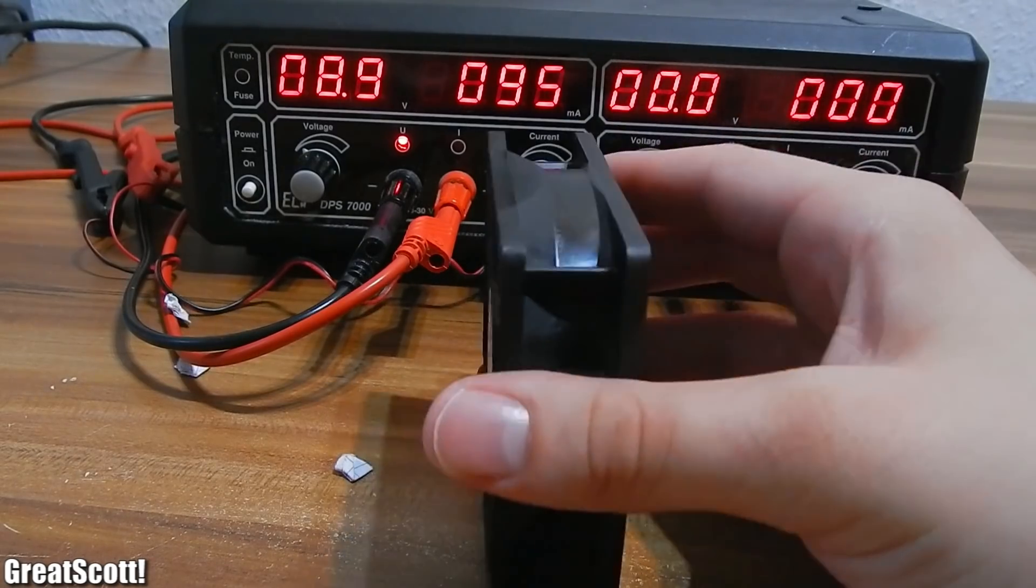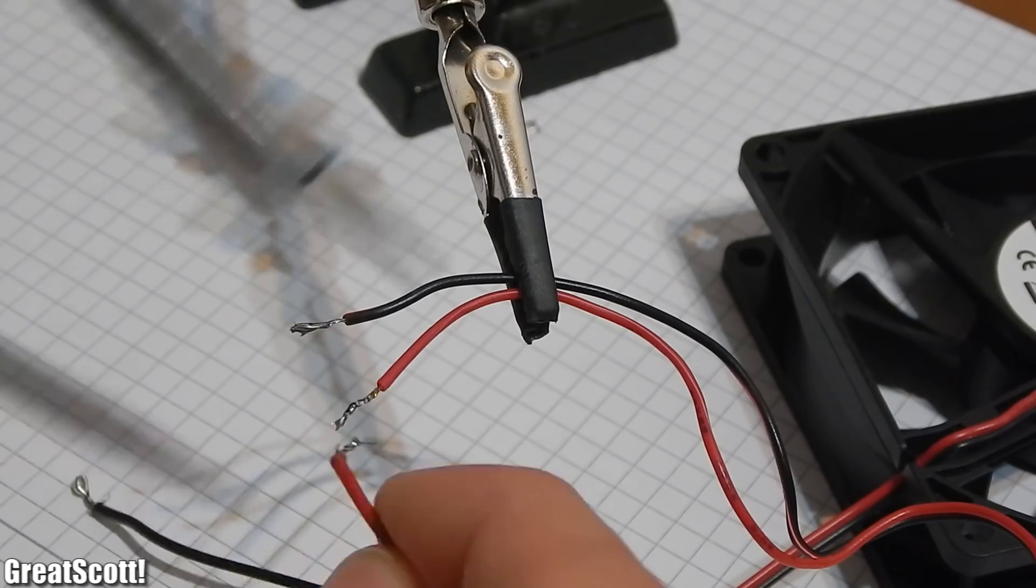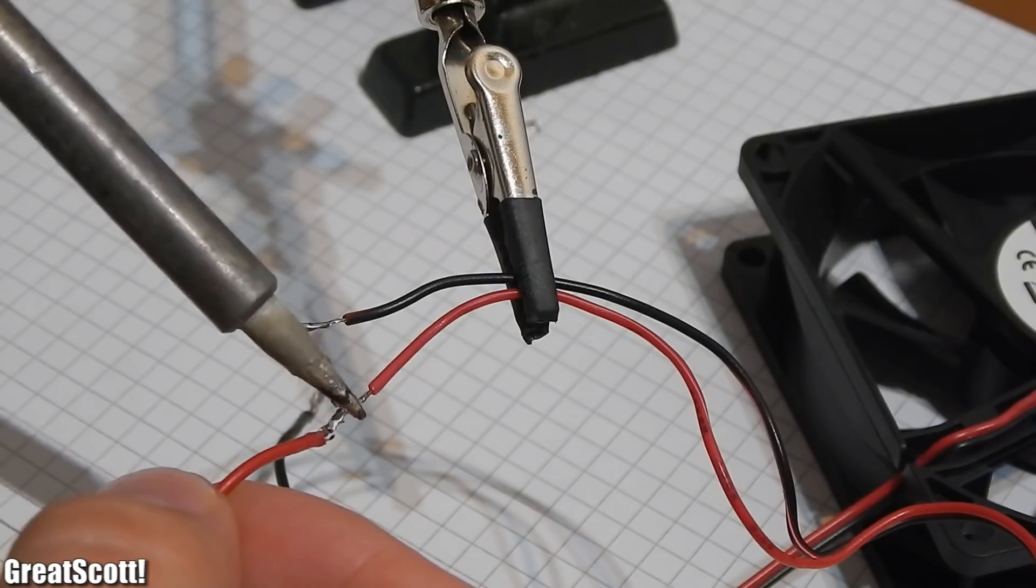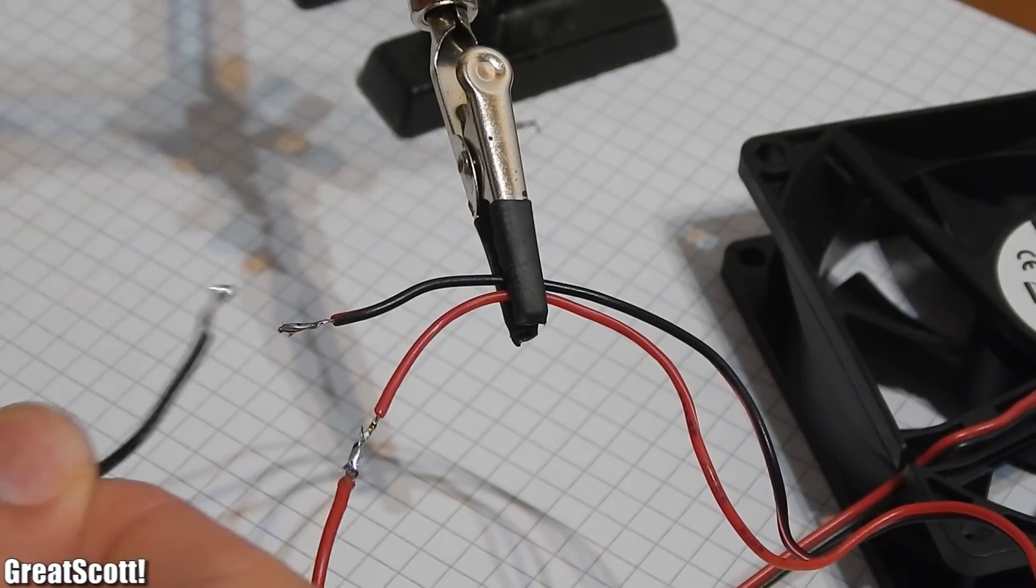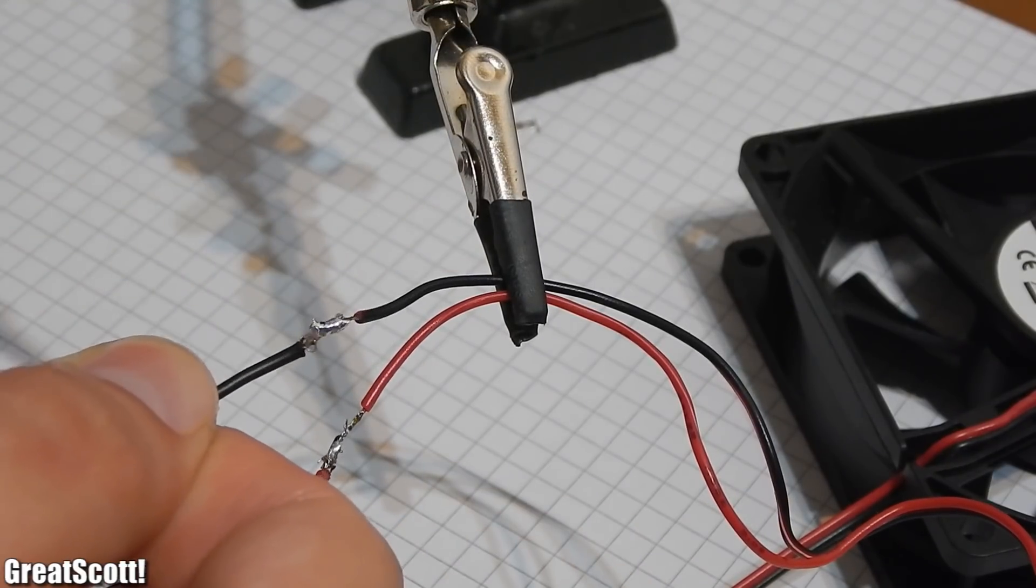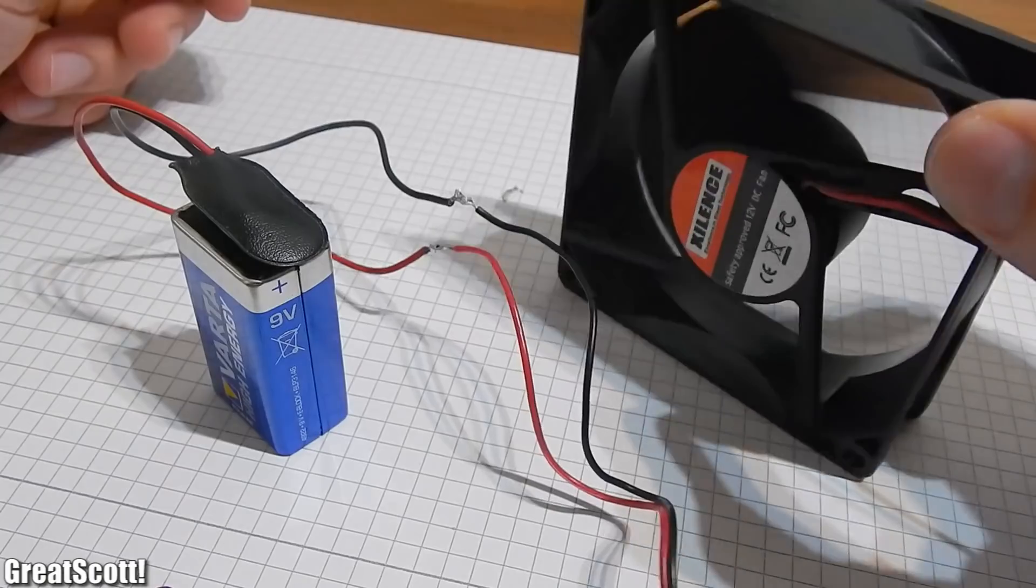It produces quite a nice breeze and takes around 100 milliamps. Now all we need to do is connect the red wire of the 9 volt connector to the red wire of the fan and the black wire to the black wire. And done! That is all!